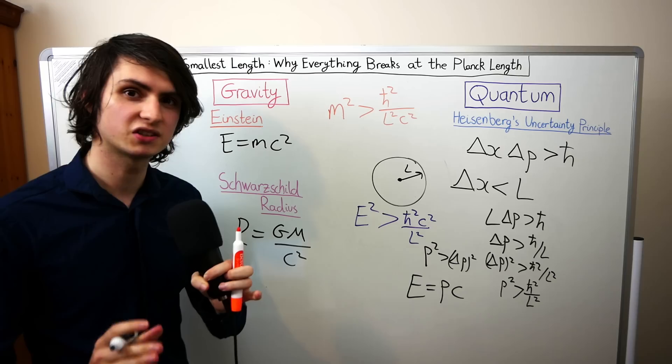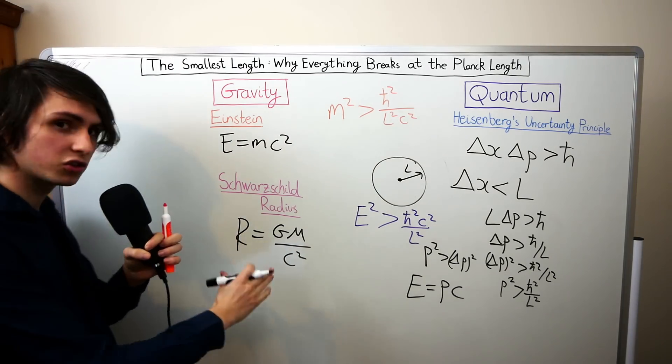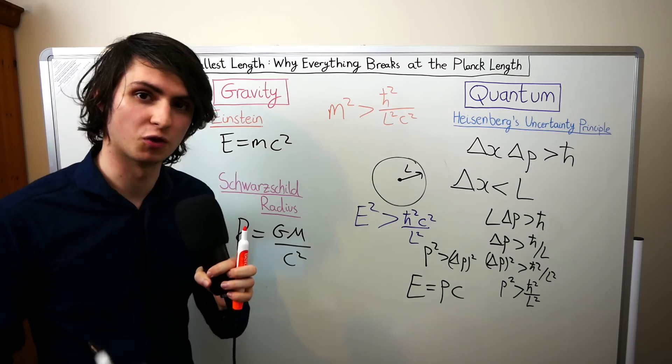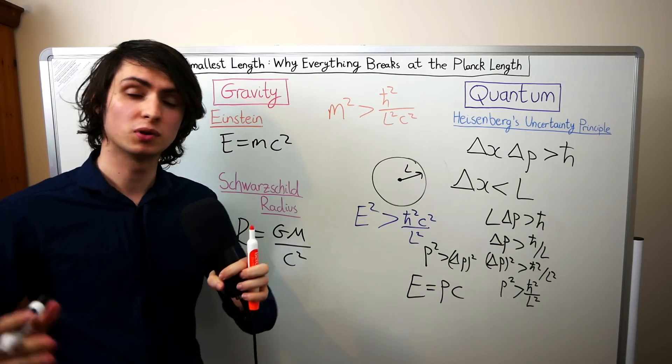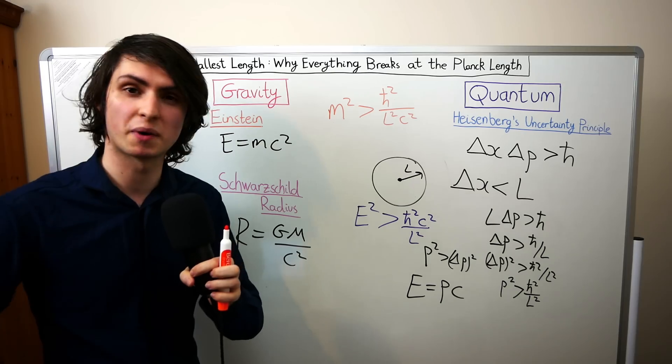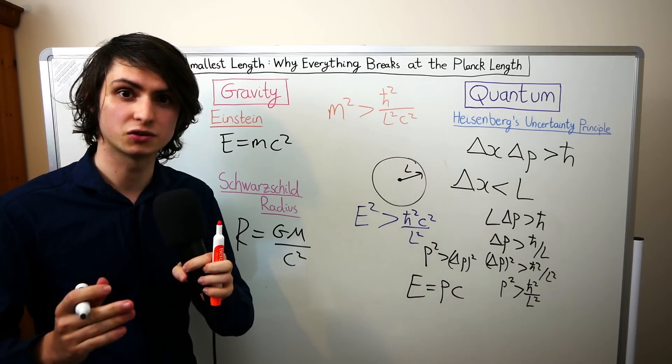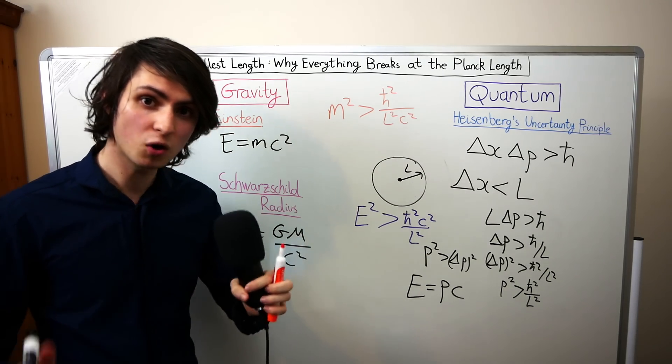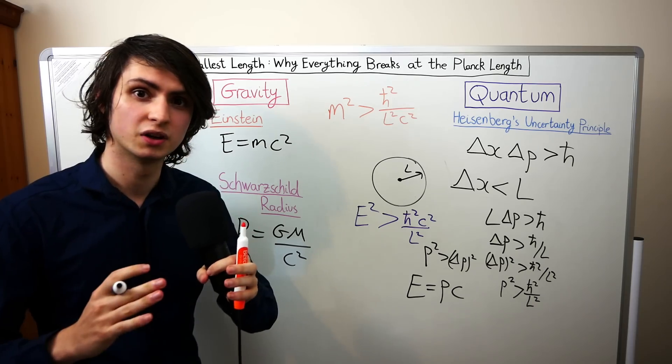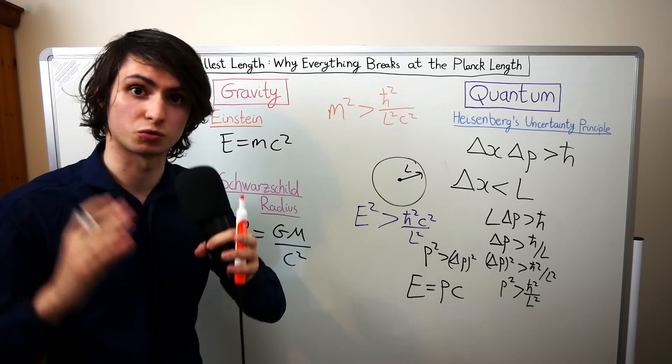G and c are just constants and m is the mass of the object that we're considering. The Schwarzschild radius tells us the length that we'd have to squash this object down to in order for it to form a black hole. For example, our sun has a Schwarzschild radius of about three kilometers. This tells us that in order for our sun to form a black hole we'd need to compress it down to a sphere of radius three kilometers.